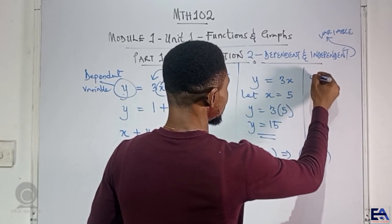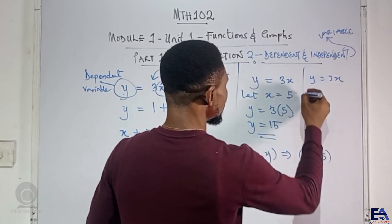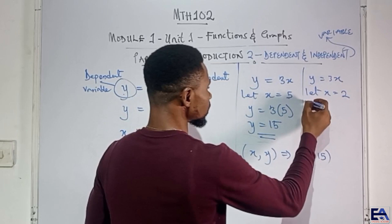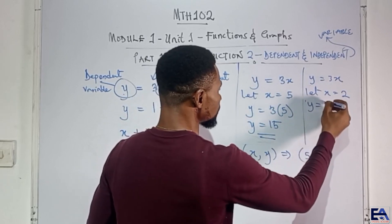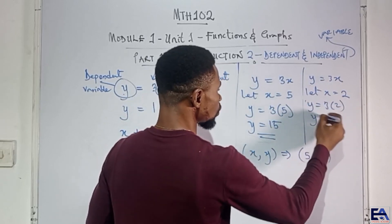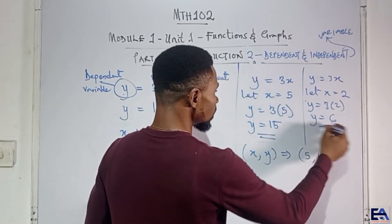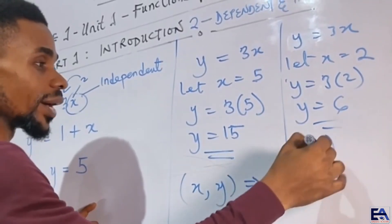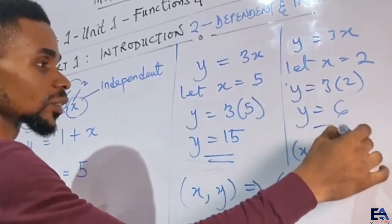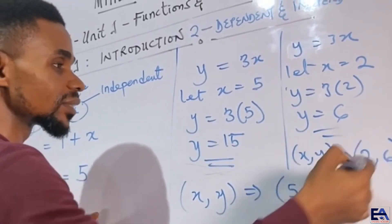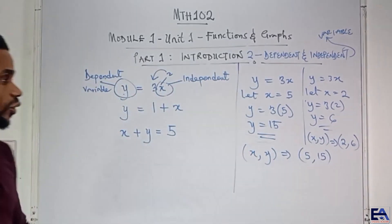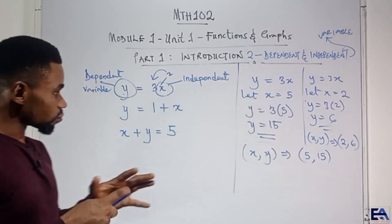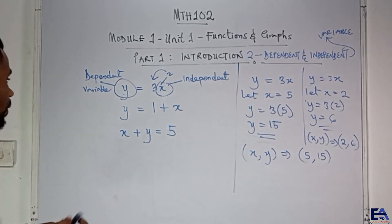If we have y equal to 3x and let x be 2, then y equals 3 times 2, which is 6. So if you have an ordered pair (x, y), it means when x is 2, y is 6. That is how it always works — one variable depends on the other.